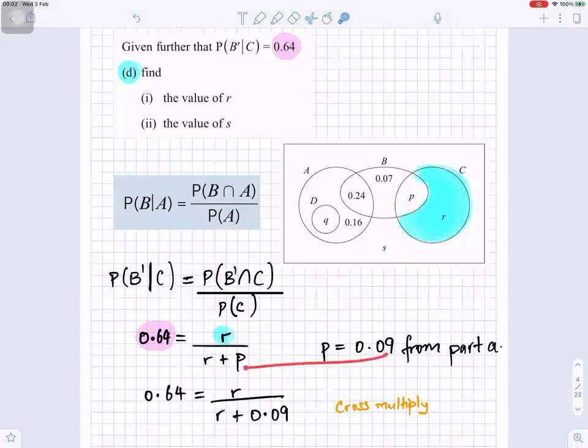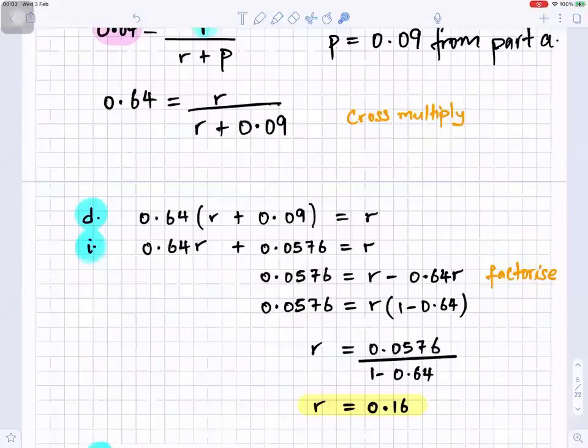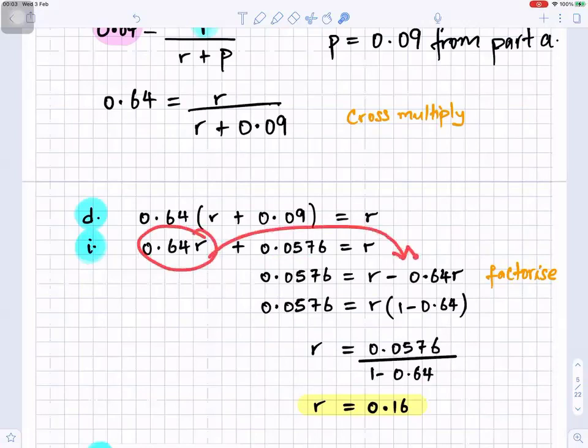Now, we know P is 0.09 from part A, so we substitute in 0.09. And to solve this, we cross-multiply. So you would have 0.64 times R plus 0.09 equals to R. You remove the brackets. 0.64 times R, 0.64 times 0.09, 0.0576 equals to R. Now, you take 0.64R to the right-hand side, it becomes minus. Now, you factorize. R is common.